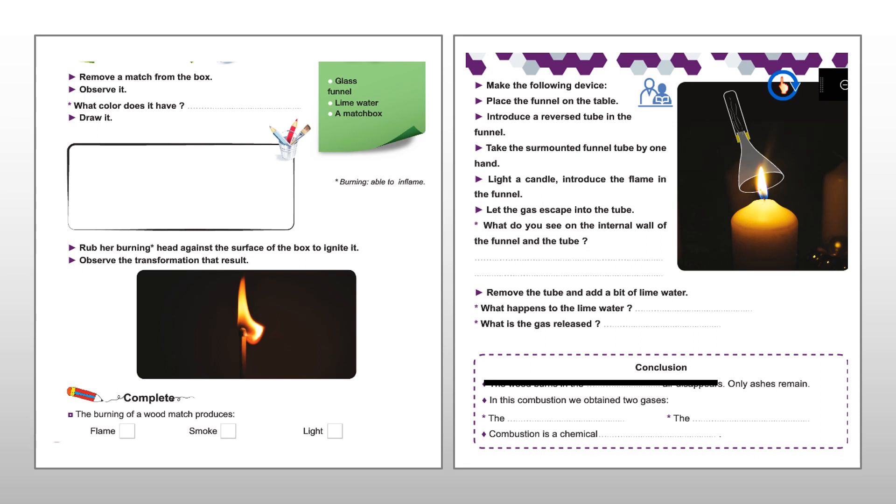Rub her burning head against the surface of the box to ignite it. Observe the transformation that resolved. Complete. The burning of a wood match produces flame. It will produce also smoke. And of course, it will give us light.